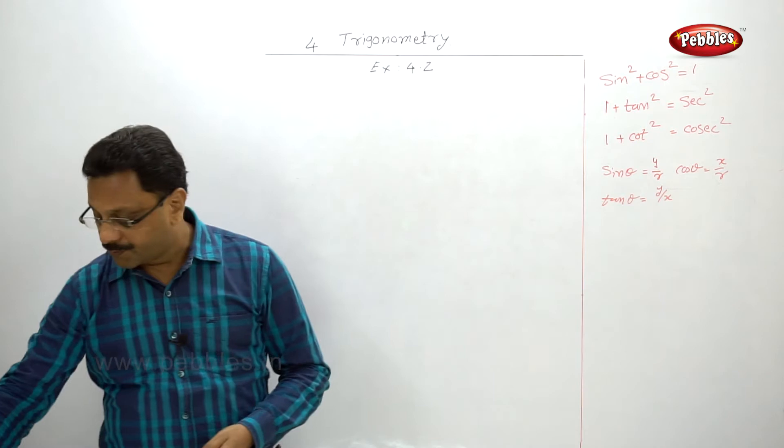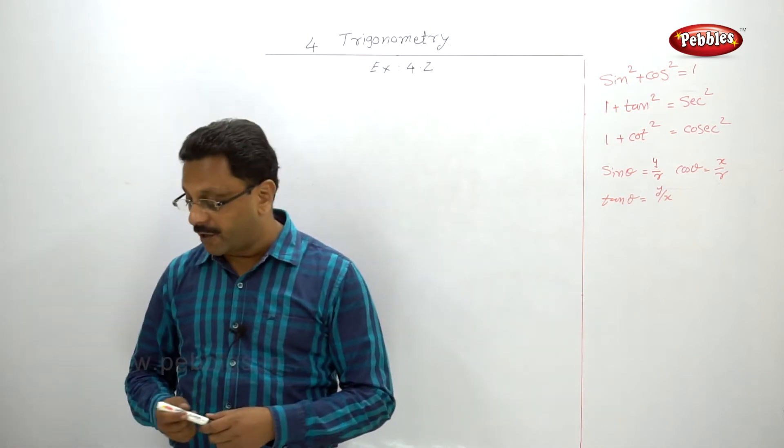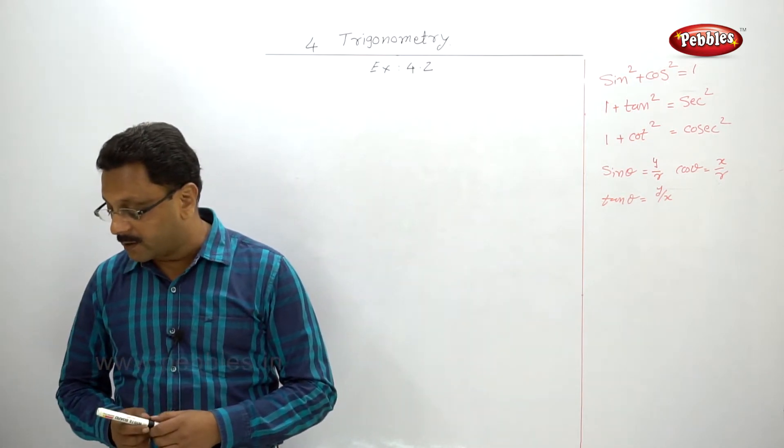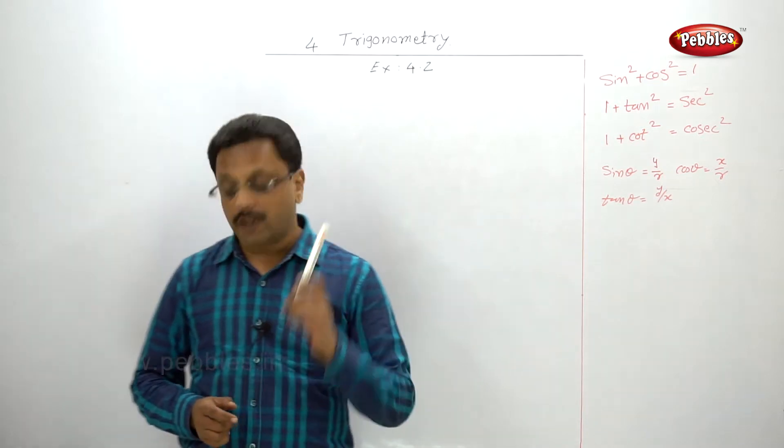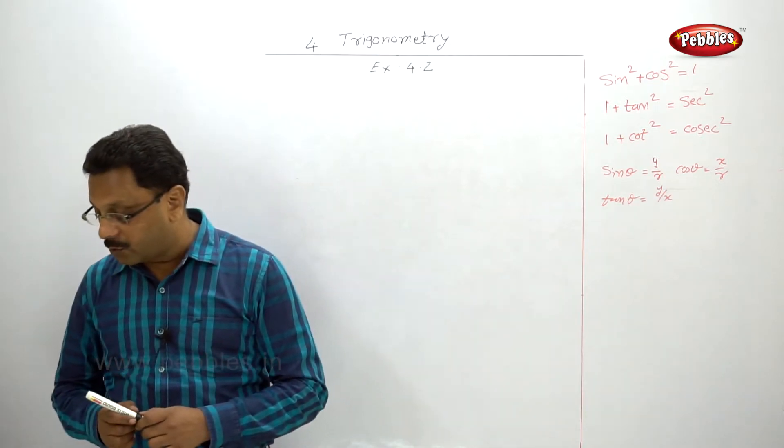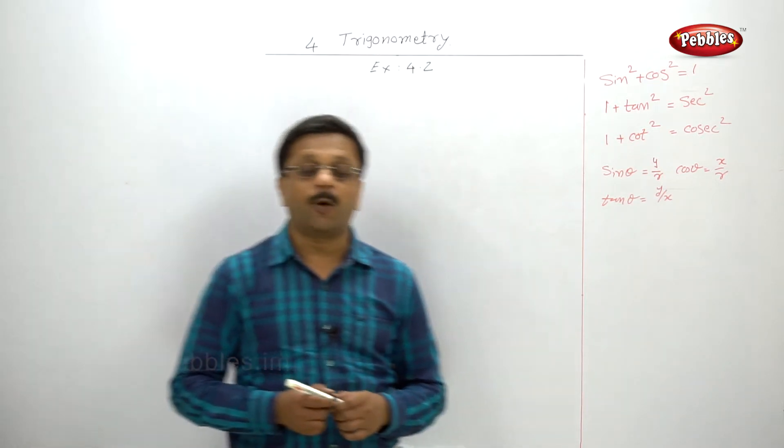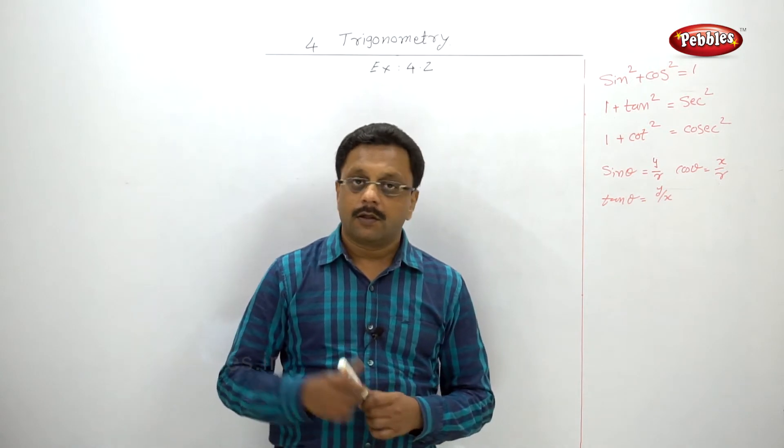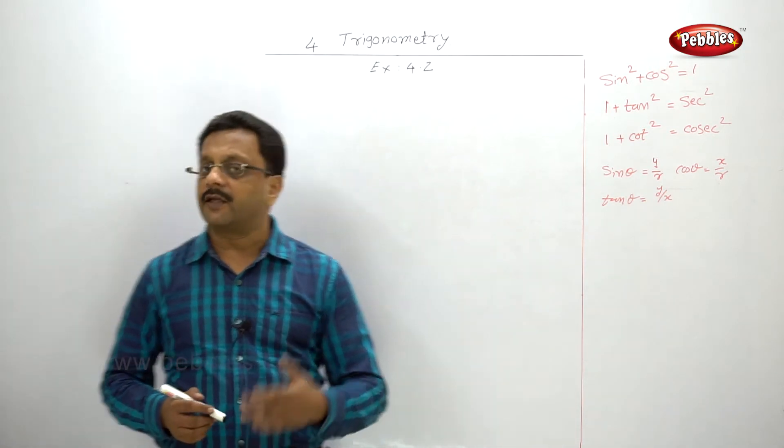Let us solve 4.2. Find the trigonometric ratios of the angles in standard position whose terminal arm passes through the point. Six sub-questions are there. We will solve only one and rest you are going to solve.